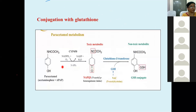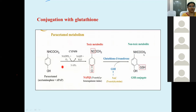Some drugs like paracetamol undergo Phase 1 and Phase 2 metabolism. By Phase 1, paracetamol becomes a toxic metabolite via Cytochrome P450. By Phase 2 — conjugation by glutathione — glutathione transferase catalyzes the transfer to form non-toxic glutathione conjugates. So the toxic Phase 1 metabolite of paracetamol is detoxified by glutathione conjugation.